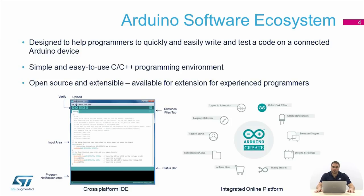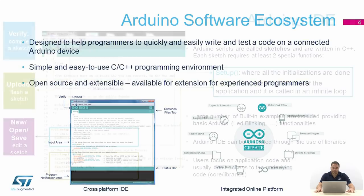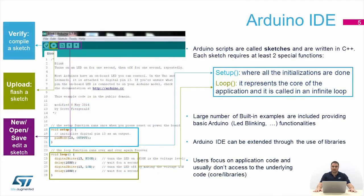The Arduino software ecosystem has been designed to help programmers to quickly and easily write and test code on a connected Arduino device. It's a simple and easy to use C++ programming environment available in two versions: an offline version, the classical IDE, and an online version so it's possible to program in a web browser.